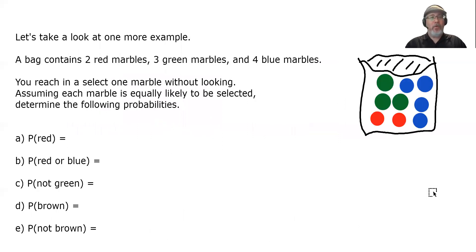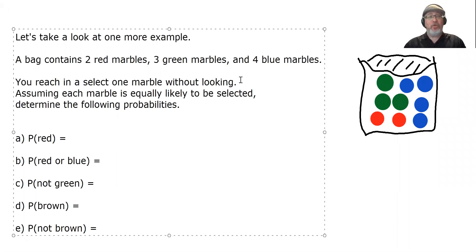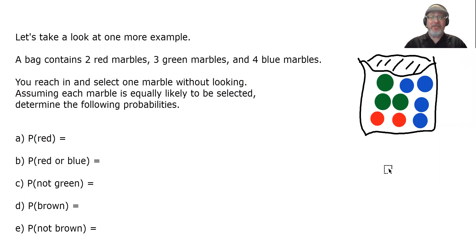Let's take a look at one more example, or 1 or 5, depending upon how you look at it. A bag contains 2 red marbles, 3 green marbles, and 4 blue marbles. There's a picture of the bag with the 2 red, 3 green, and 4 blue marbles inside of it. Assuming each marble is equally likely to be selected, determine the following probabilities. You reach in and select one marble without looking. Assuming each marble is equally likely to be selected, determine the following probabilities. Number 1, the probability that you draw a red marble.